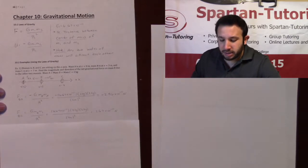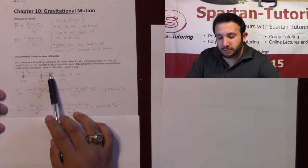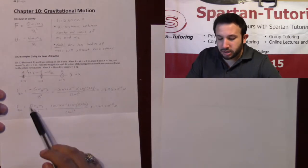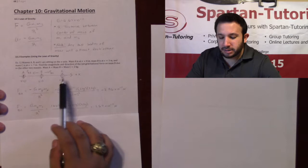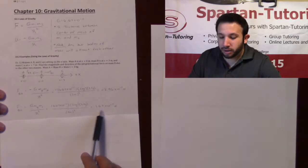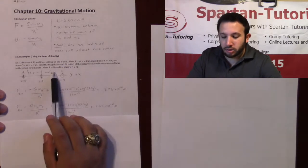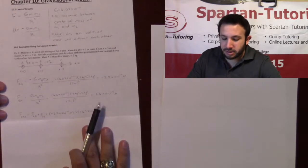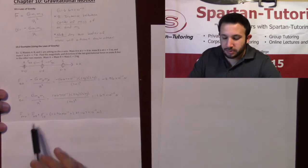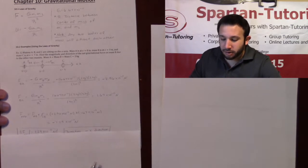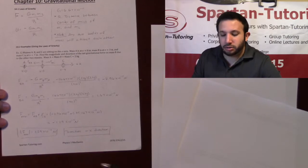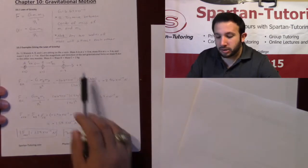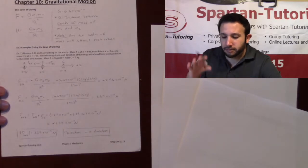Likewise, the force that b feels from c is going to be a positive force, since this force is pointed in the positive direction. Utilizing this equation, that's going to be my gravitational constant G, then mass of b, mass of c over r squared. But now that r — the distance between b and c — is 4. When I plug all those numbers into the calculator, if I want the net gravitational force, I sum these two forces together. The net force is just the force between a and b and between b and c. When I add them together, I come out to negative 1.29 times 10 to the negative 11. The magnitude of that force is 1.29 times 10 to the negative 11 newtons, and the direction is pointed in the negative direction of my axis.